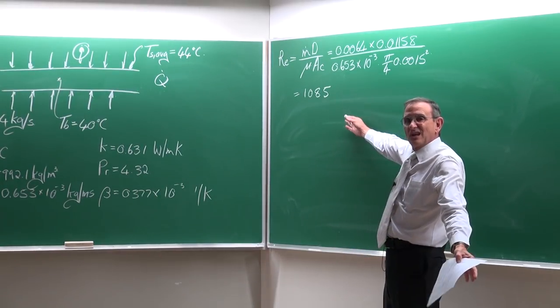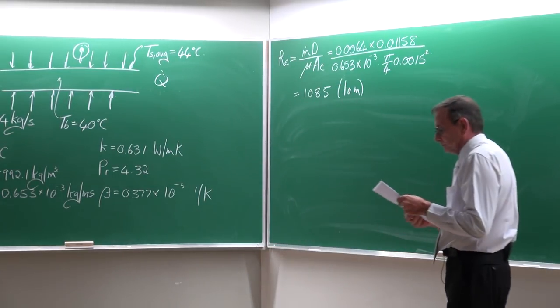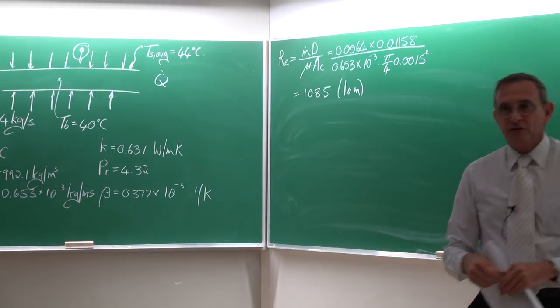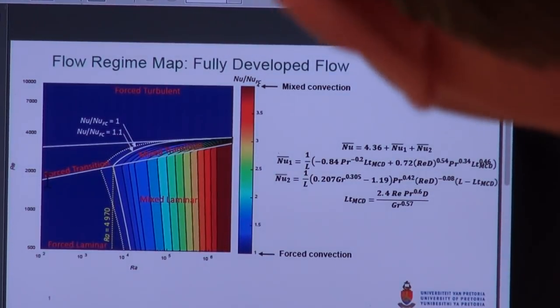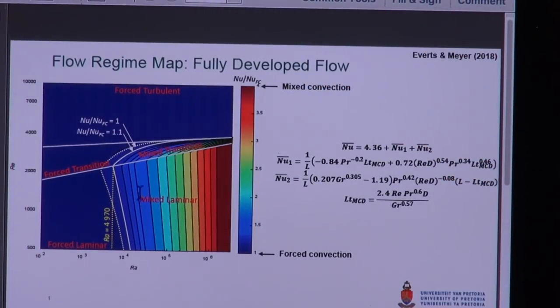That is important because it tells us if the flow is laminar or turbulent. It is lower than 2,100 to 2,300, therefore the flow is laminar. Looking at the map, we have the Reynolds number on one axis and the Rayleigh number on the other, and to determine if the flow is laminar forced convection or mixed convection, we need to get the Rayleigh number.